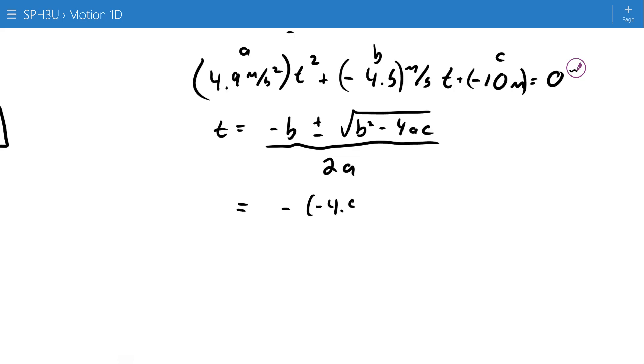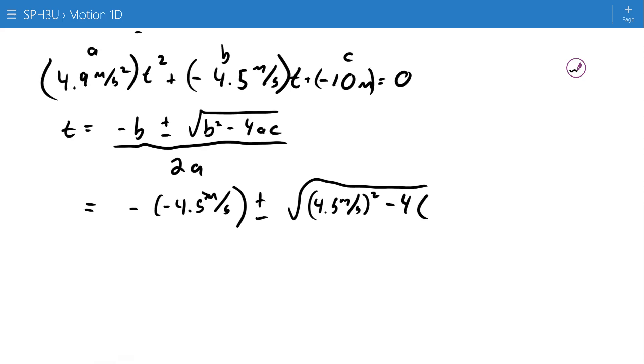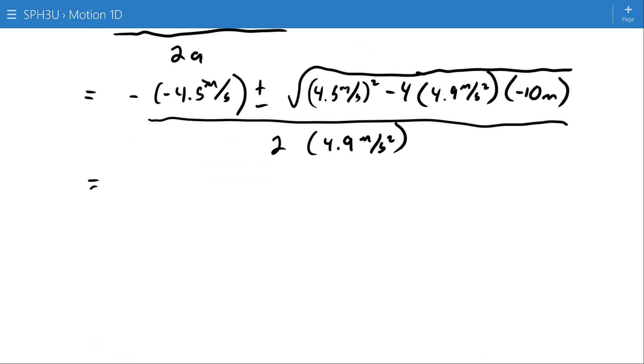So, negative, negative 4.5 meters per second. That bracket should be back there. Plus or minus the square root of 4.5 meters per second squared, minus 4, times 4.9 meters per second squared, minus 10 meters. It's a little annoying to carry your units around in doing a calculation like this. But if we remember, they have to work out. And I think it can be motivating in that we can think of it as a check to make sure that you haven't done anything that you shouldn't have done, or that you haven't accidentally put a term in the wrong place or something like that.